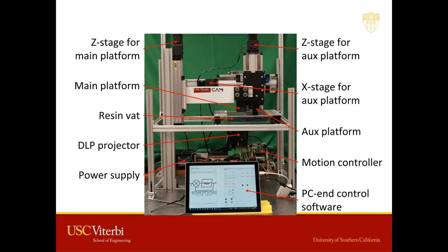The key idea is to print the most critical channel roof layer separately via double exposure on the resin VAT surface using an additional build platform called AUX platform.